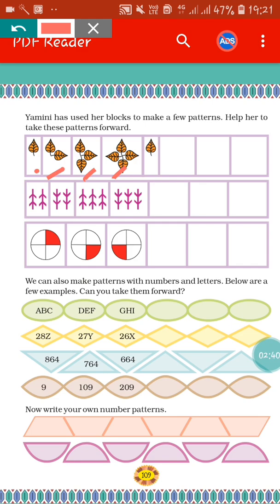In the fourth one, there are four leaves. Again, in the fifth one, there is one leaf. So how many leaves will be in the next one? Yes, there will be two. How many leaves will be in the next one? Yes, there will be three. And how many leaves will be in the next one? Yes, it will be four. In this way, you have to draw the leaves and it will become a pattern. Similarly, in the second and third ones, you have to carry forward the pattern.